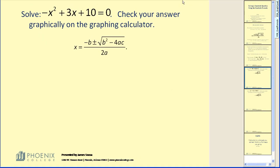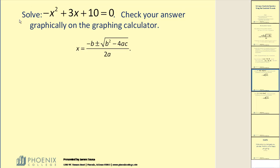Let's take a look at an example. We want to solve negative x squared plus 3x plus 10 equal to 0. Check the solution graphically. This is factorable, but we are going to solve this using the quadratic formula.